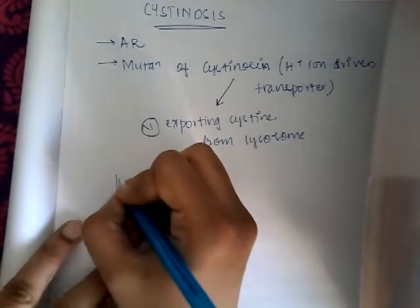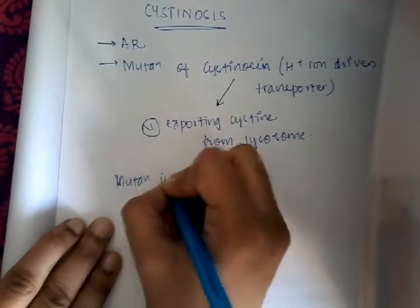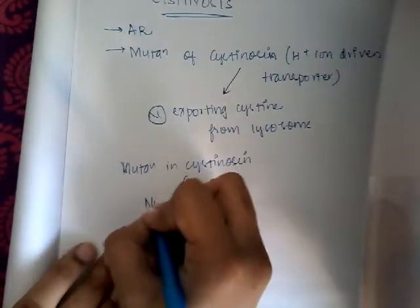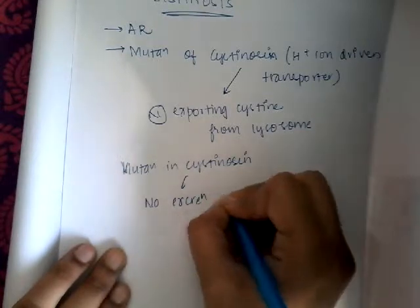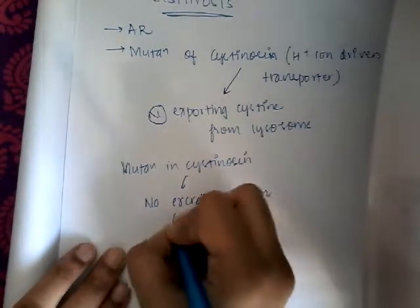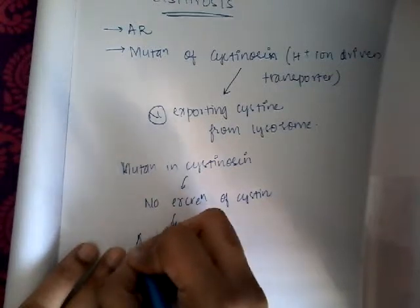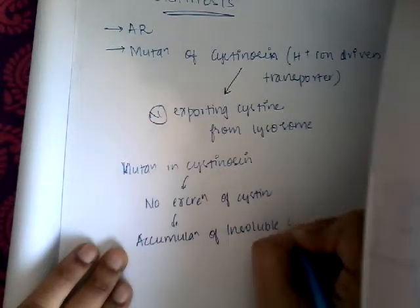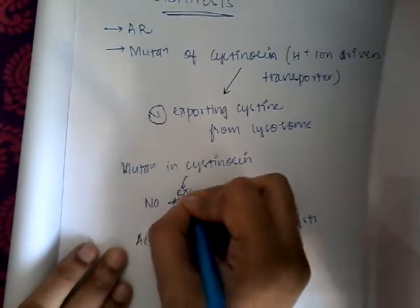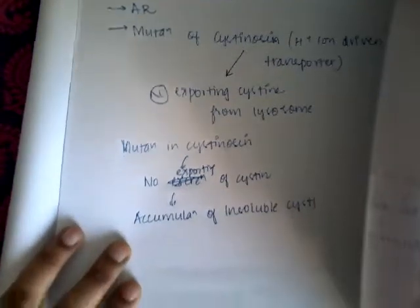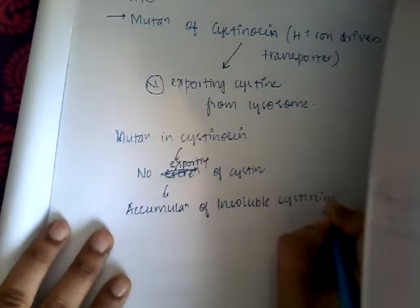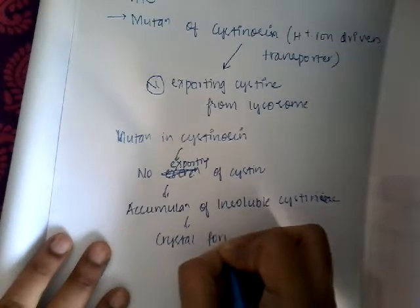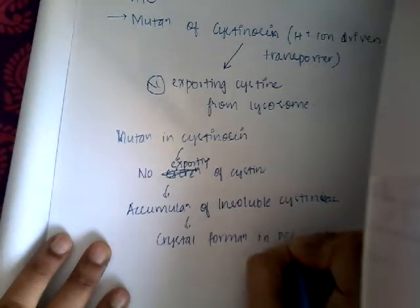When there is a mutation in cystinosin, there is no excretion of cysteine, which leads to accumulation of insoluble cysteine. There is no exporting of cysteine from the lysosome, so this cysteine will lead to crystal formation in the proximal convoluted tubule (PCT) and other organs.